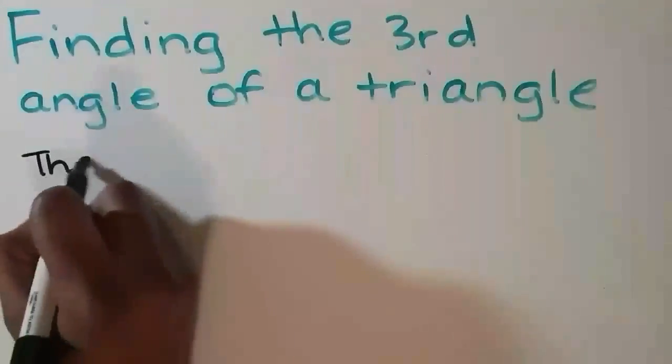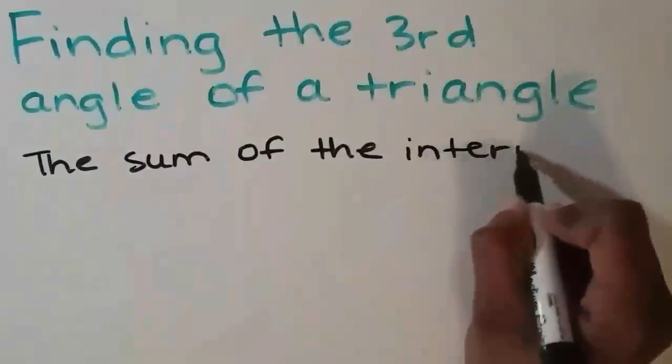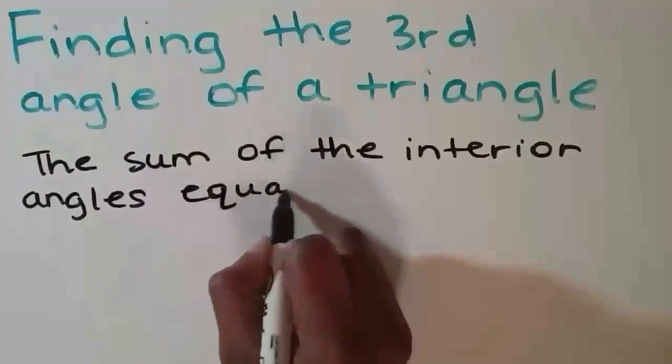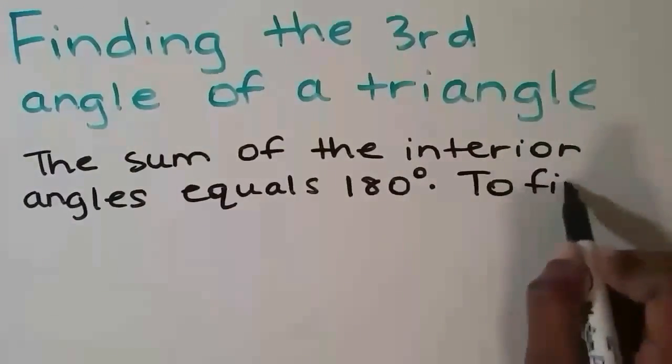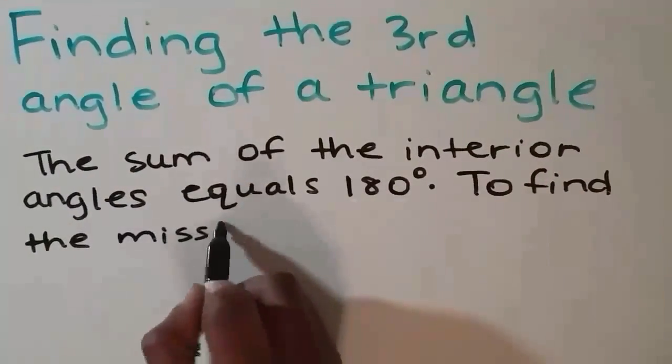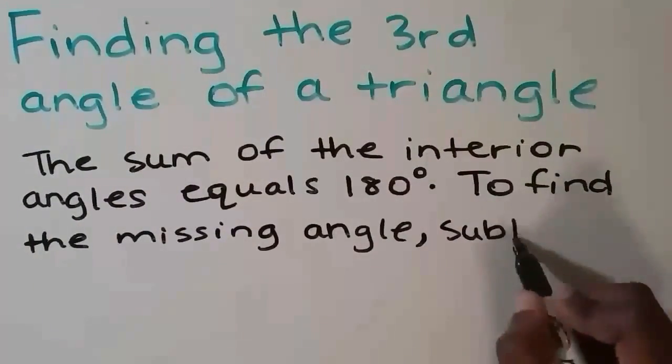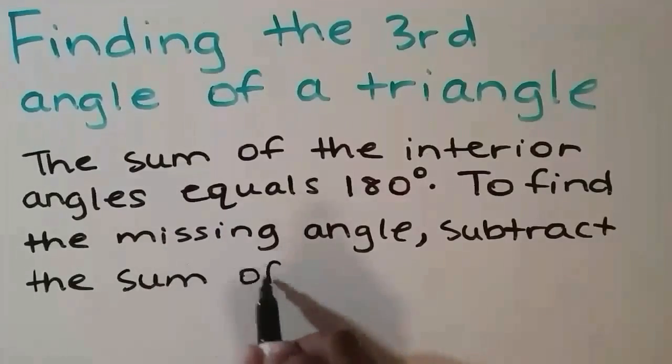In this video, we'll be finding the third angle of triangles. The sum of the interior angles is equal to 180 degrees. So, to find the missing angle, we subtract the sum of the two angles that we know from 180.